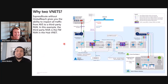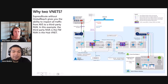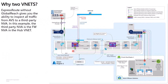Why two VNets? What we're trying to accomplish is we want to have all traffic from AVS monitored or inspected via a third-party firewall NVA inside your hub virtual network. This NVA can be any third-party NVA of your choosing as long as it supports BGP. It will monitor all types of traffic — traffic to on-premise, internet-bound, and inbound.